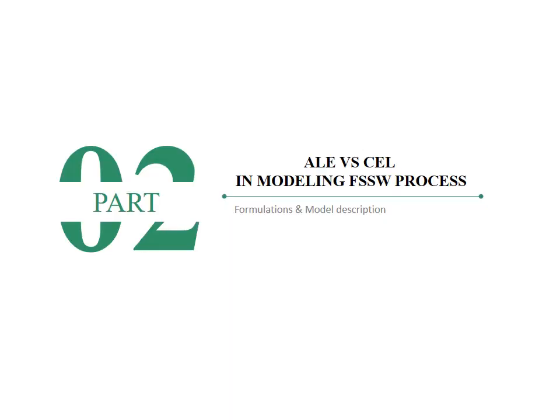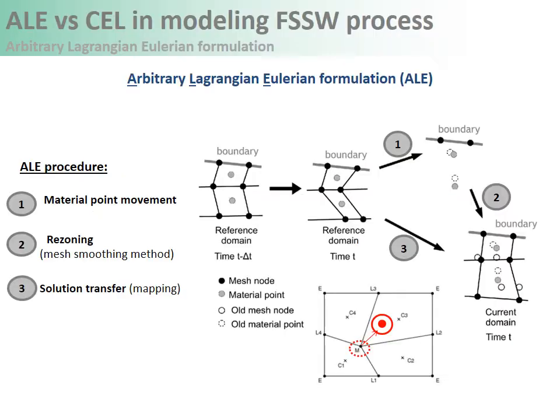Let's go back to the definition of the numerical formulations. I will explain the ALE and CEL formulations in modeling the friction stir spot welding process. The ALE method was used to reduce mesh distortion in cases of large deformation by adapting the mesh. The procedure of ALE is divided into three steps: first, during deformation, the material points are moved to new positions; then, a rezoning step, where the mesh nodes are relocated according to the mesh smoothing method. For the topology shown here, the new position of a point M is determined by pushing the node away from element center C1 toward element center C3.